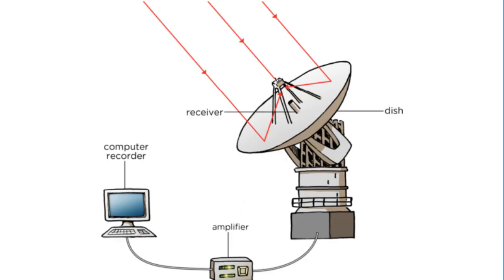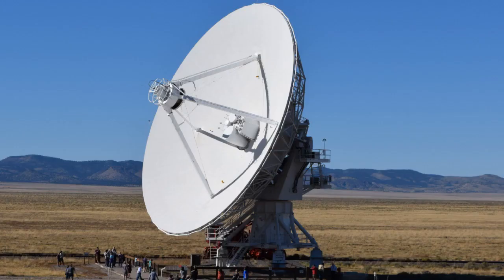Now we're going to talk about how radio telescopes work. Radio telescopes are basically astronomical instruments consisting of a radio receiver and an antenna system used to detect radio frequency radiation between wavelengths of 1 millimeter to 10 meters, emitted by extraterrestrial sources such as stars, galaxies, and quasars. Radio telescopes are typically large parabolic antennas — also called dishes — similar to those used in tracking and communicating with satellites and probes.